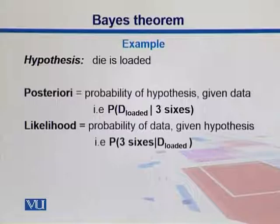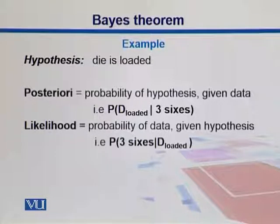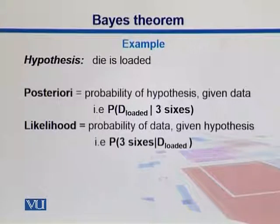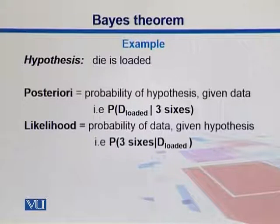The second form is likelihood, where you calculate the probability of the data given the hypothesis. So if you know the die is loaded, you guess how many sixes you will get. What is the probability of getting three sixes while the die is loaded? This is the reverse of the previous case, where you see three sixes and suspect the die is loaded.